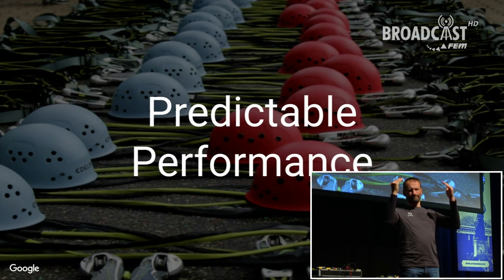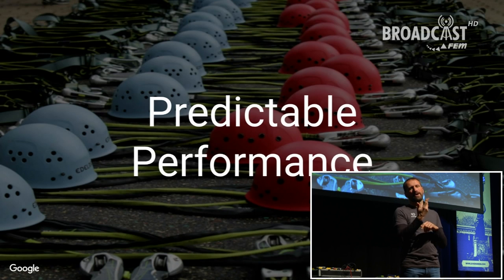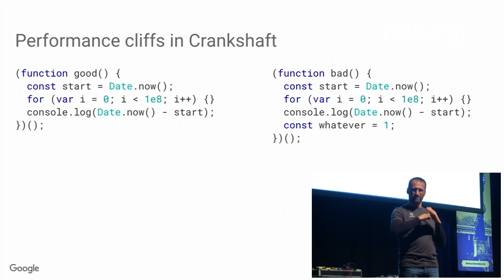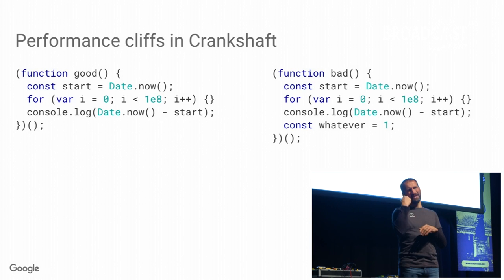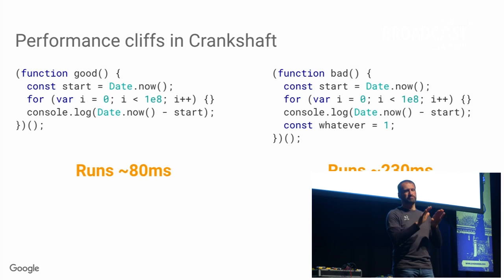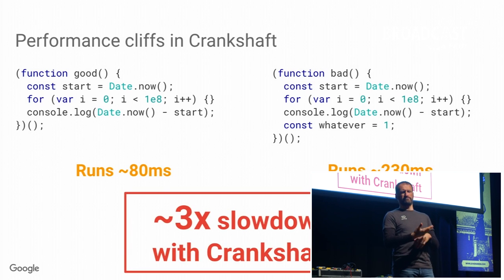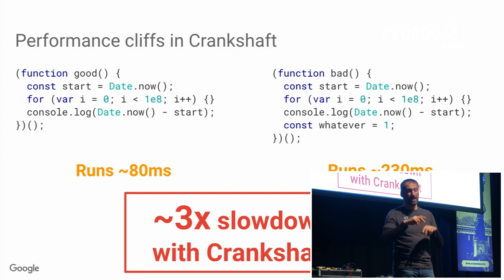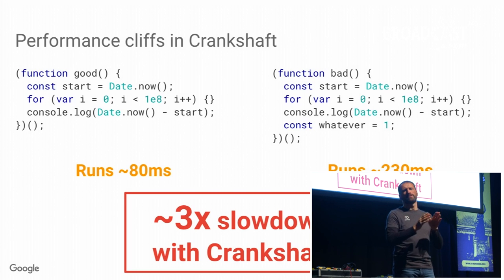On a high level, what does TurboFan give you? What we try to accomplish is predictable performance — that you can rely on the VM to not just fall off some performance cliff arbitrarily. This is one of my favorite examples: a bug reported end of last year. There's just an empty loop and you take the time before and after. In one example you just add a constant that you don't use after the loop — that should have the same performance. But in Crankshaft, in Node 7 or Chrome 58, you get a pretty significant 3x difference for no obvious reasons. This is one thing we wanted to fix with TurboFan — so that you can rely on the VM behaving sensibly if you change something.